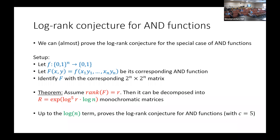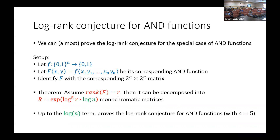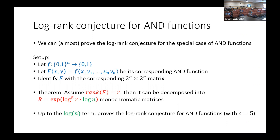Any questions about the connection to the log-rank conjecture? [Question: Do the examples giving the lower bound of the general log-rank conjecture use AND functions?] You can get quasi-polynomial separations within AND functions — that was one of the original examples. But the best examples don't use AND; they use a slightly more complicated gadget. The current lower bound is r^{1.6}, so not quite quasi-polynomial even for AND functions.